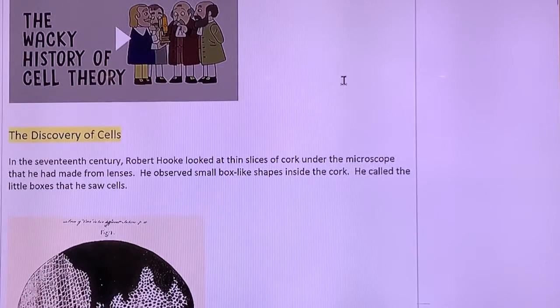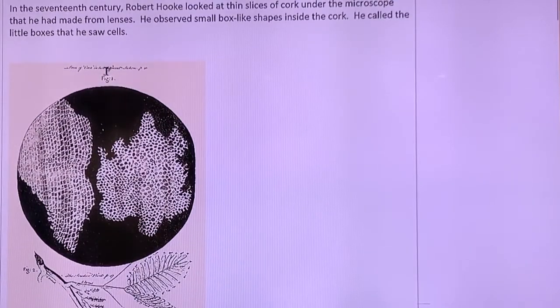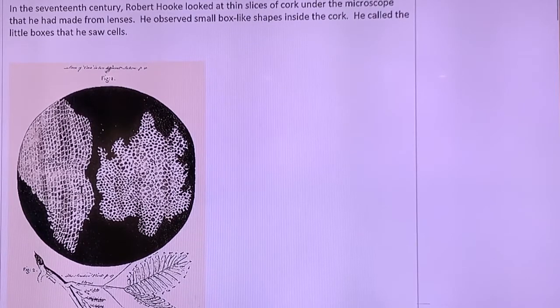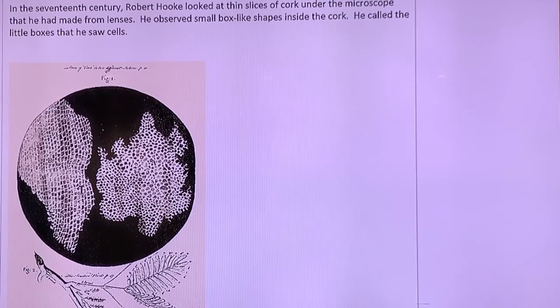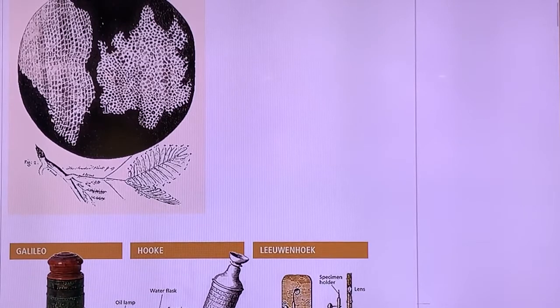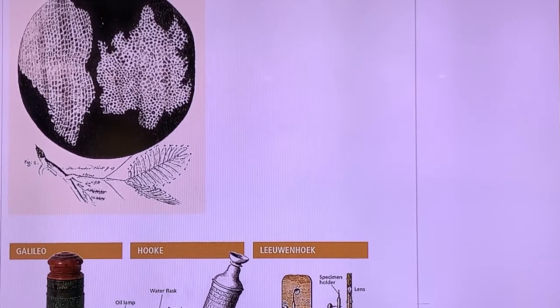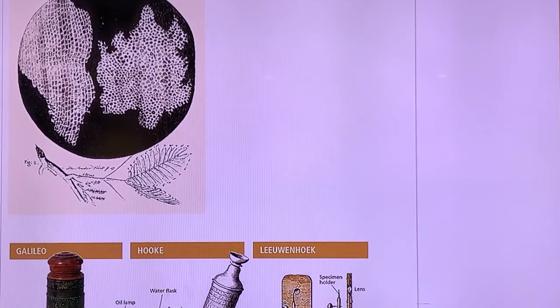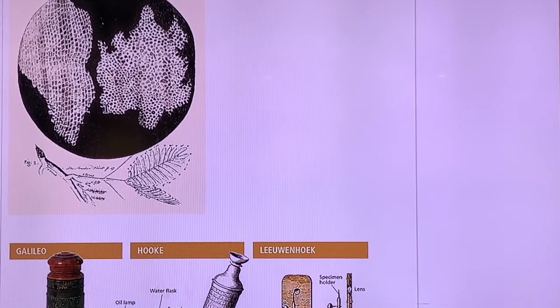We talked about Robert Hooke quite a bit and he went and he looked at cork. Remember he called it cells because it reminded him of the cells that monks lived in, in a monastery. They looked like these little square cells because they were plant cells. Cork is a plant. So the cells have cell walls and they had really nice clear structures. Just like when we looked at the onion cells.